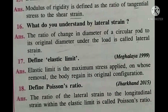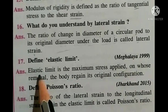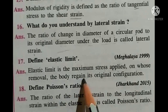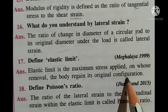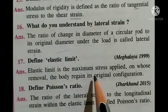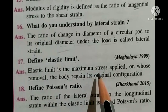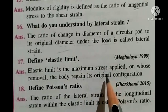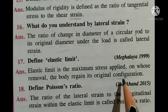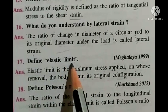Question number seventeen: define elastic limit. Elastic limit is the maximum stress applied on a body on whose removal the body regains its original configuration. When we apply a force on a body and then remove it, if the body returns to its original position, then that limiting stress value is known as the elastic limit.